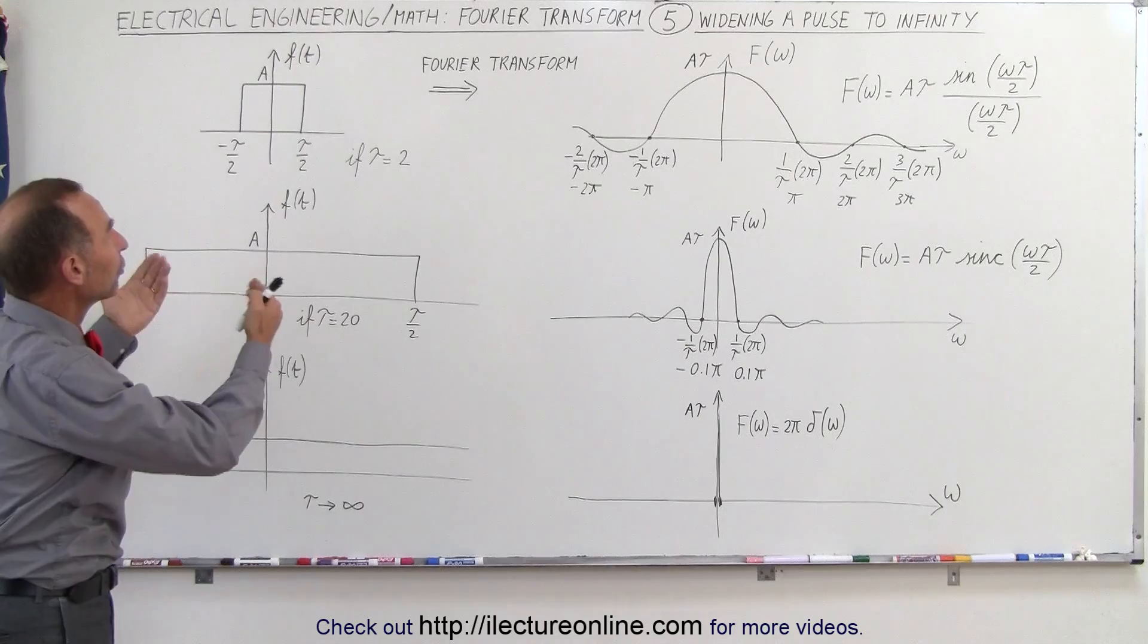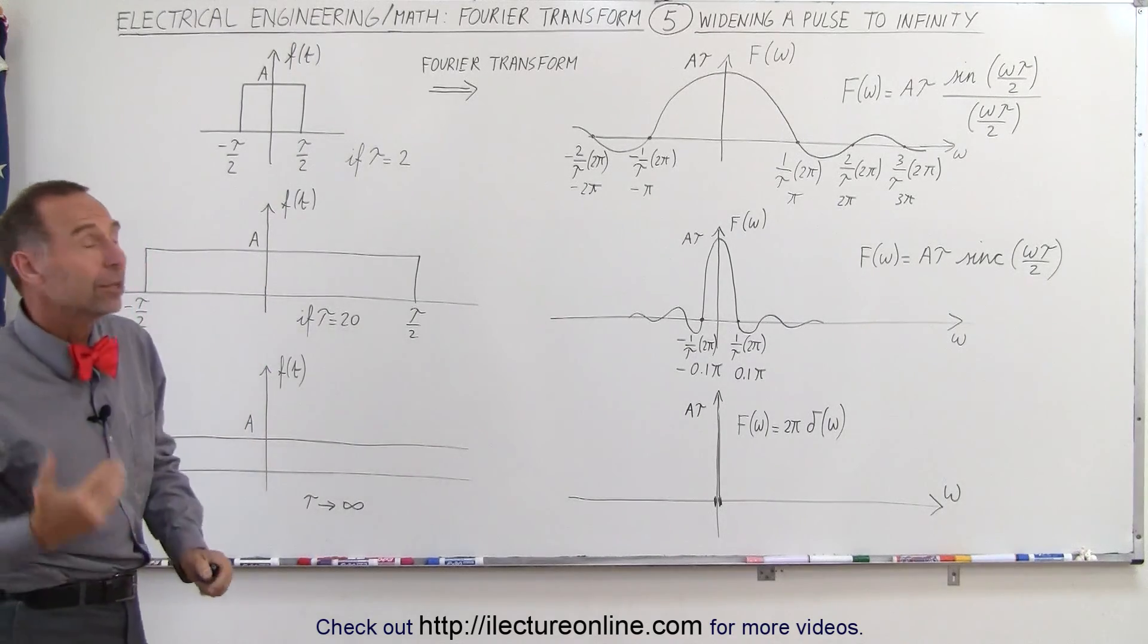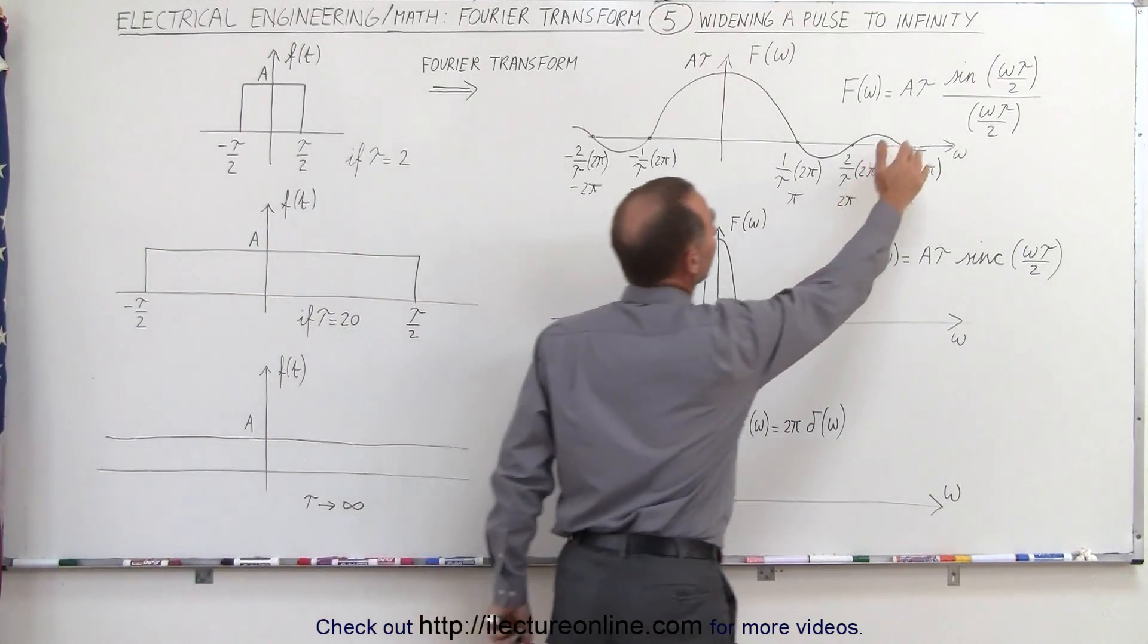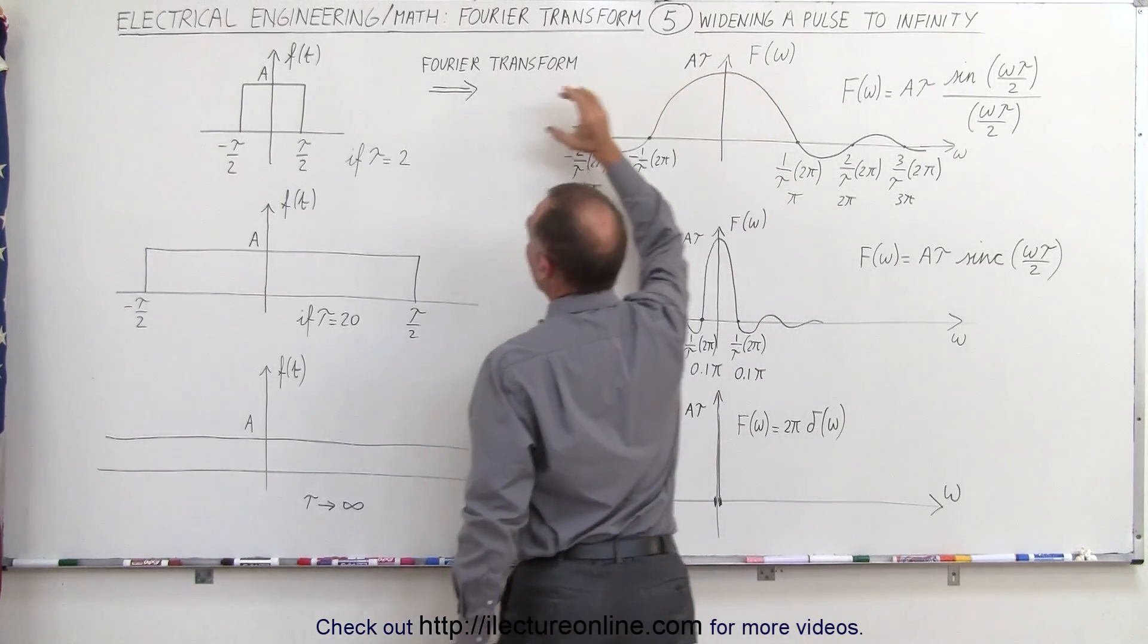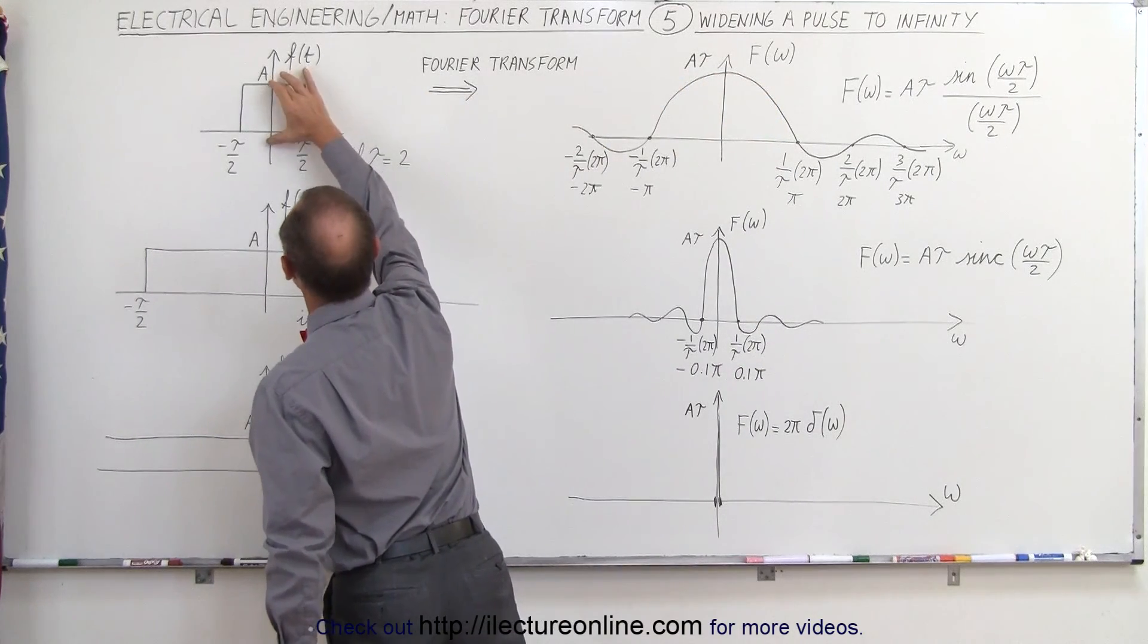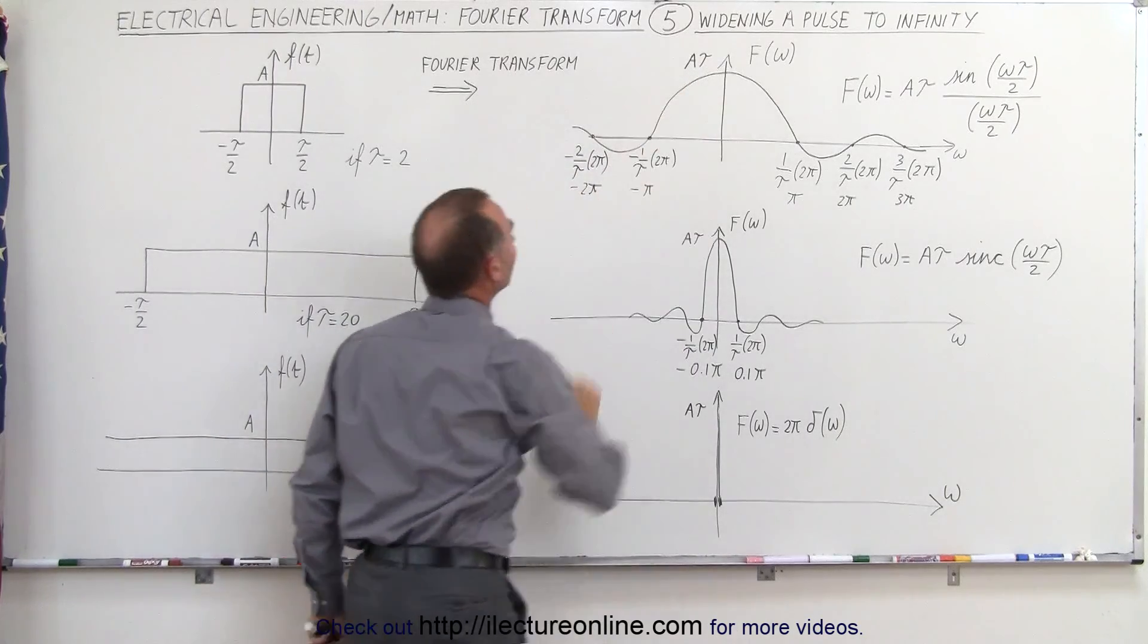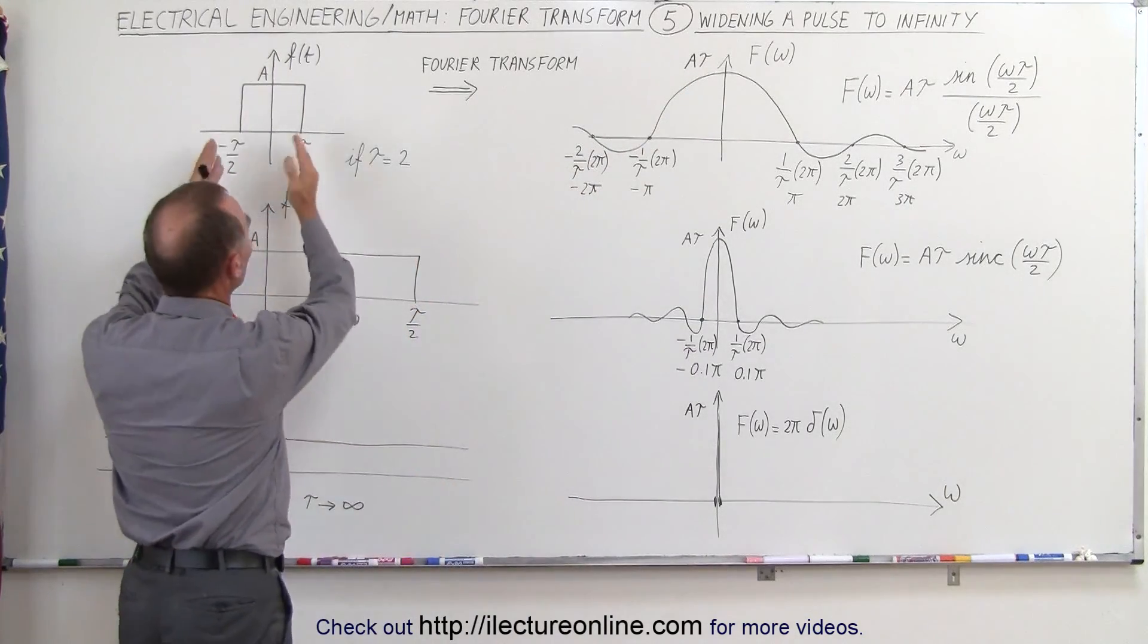Now we're going to convert that to the Fourier transform, and what we end up with is the sinc function. The amplitude here is going to be equal to A, which is the amplitude of the time domain function, times tau, which is the width of the pulse.